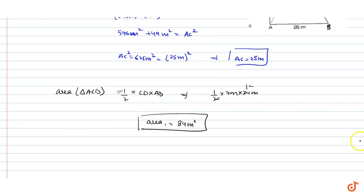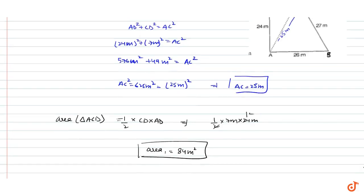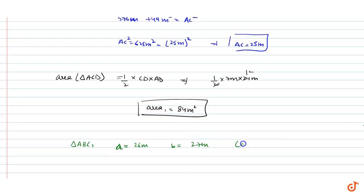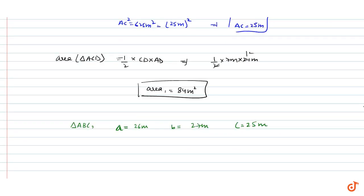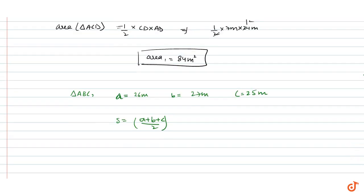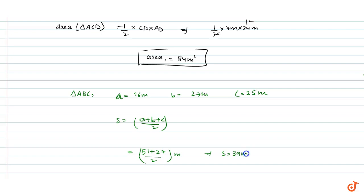Now we consider triangle ABC, where side A is 26m, side B is 27m, and side C is 25m. The semi-perimeter S equals A plus B plus C divided by 2, that is 26 plus 25 plus 27 divided by 2, which is 78 by 2. So the semi-perimeter S is 39m.